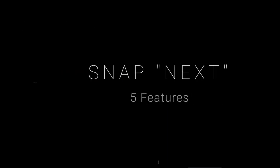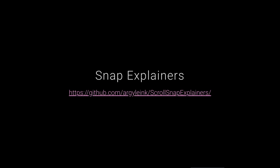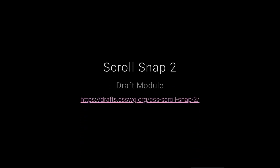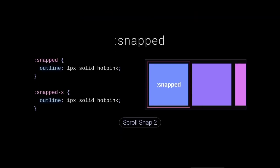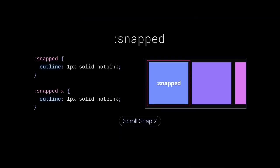What's coming next in scroll snap — check out my explainers at github.com/argyleink/scroll-snap-explainers. Scroll Snap 2 has been in draft for about a month. First: the ':snapped' pseudo-class. Wouldn't it be nice to just know which item is snapped from CSS? This item is snapped — thank you CSS! You can also ask which item is snapped on X specifically, for bidirectional matrices where two items could be snapped simultaneously.